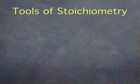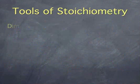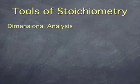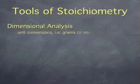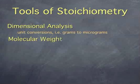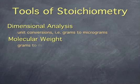In this course module, we'll arrange the tools of stoichiometry into five general categories. The first is dimensional analysis, allowing us to convert between various units such as grams and micrograms. The second is molecular weight, allowing us to convert between the mass of a substance in grams and the number of molecules of that substance in moles.